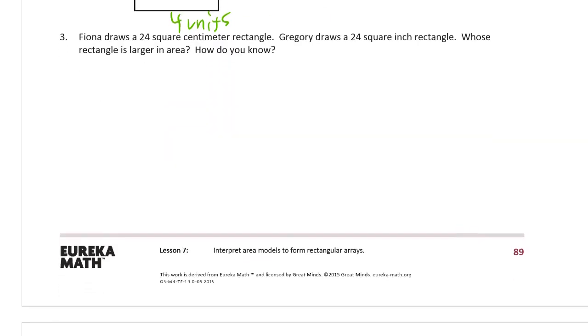Fiona draws a 24 square centimeter rectangle. Gregory draws a 24 square inch rectangle. Whose rectangle is larger in area and how do you know? Well, a square centimeter is going to be, centimeters are smaller than inches. So square centimeters have to be smaller than square inches. Or you could think, you know, inches have to be longer than centimeters. So square inches have more area than square centimeters. So Gregory's, since the number of units is the same, Gregory's has to be larger because inches are larger than centimeters.